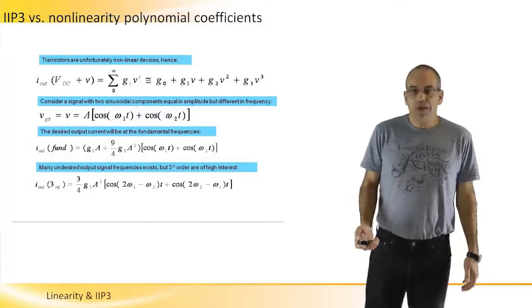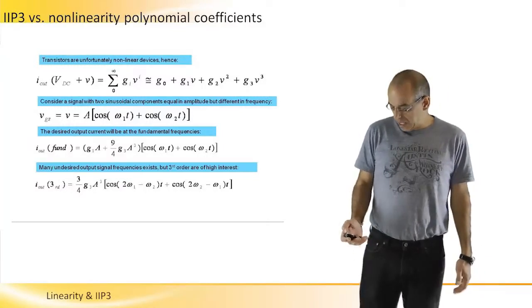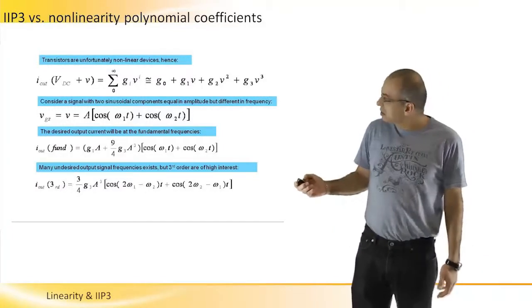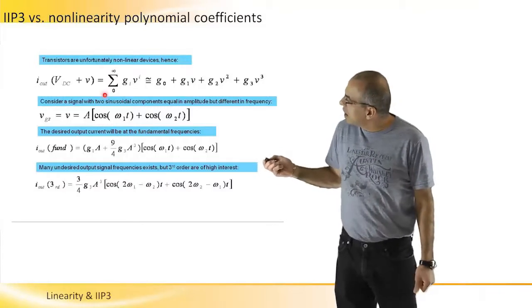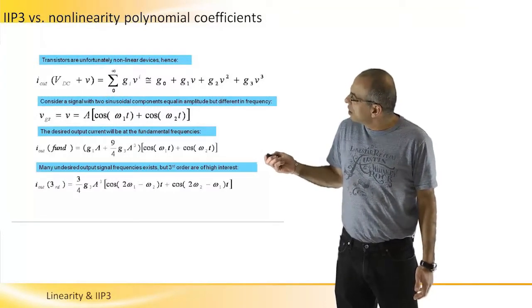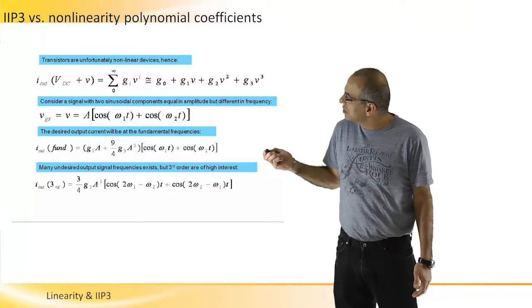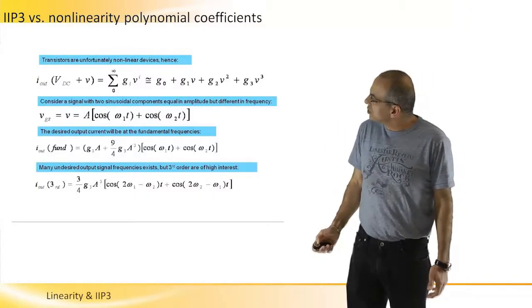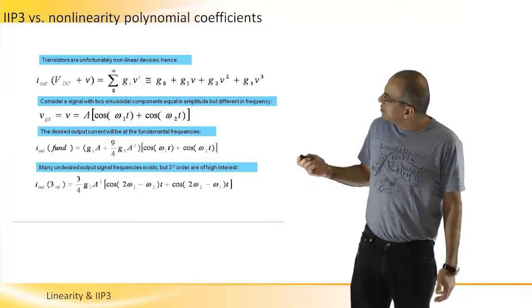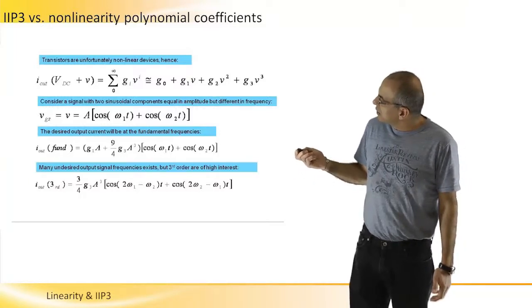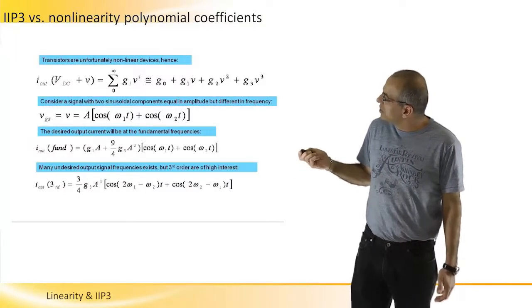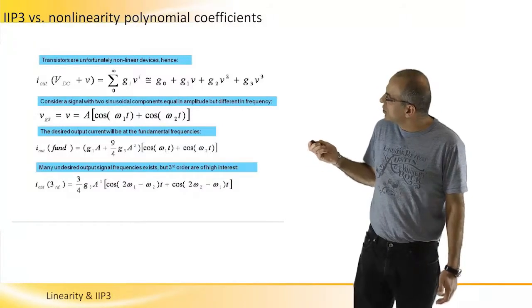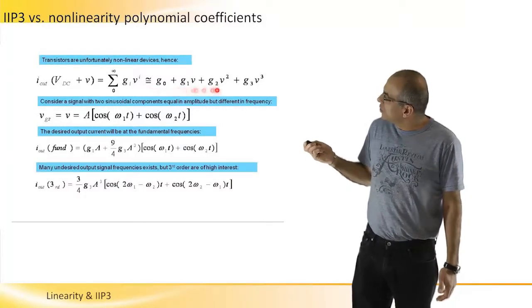And so we will just look at this output current as the sigma of polynomial coefficients multiplied by order of the input voltage. And this sigma will be infinite, but we can just take approximation.